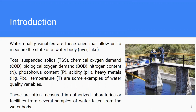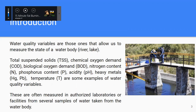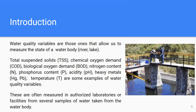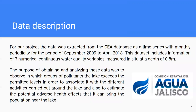There are many water quality variables that allow us to know how a water body like a river or a lake is, and if it is healthy for the population nearby or also for biodiversity. Among these, we have total suspended solids, chemical oxygen demand, phosphorus, and nitrogen content, among others. These are often measured in authorized laboratories from samples taken from the lake.